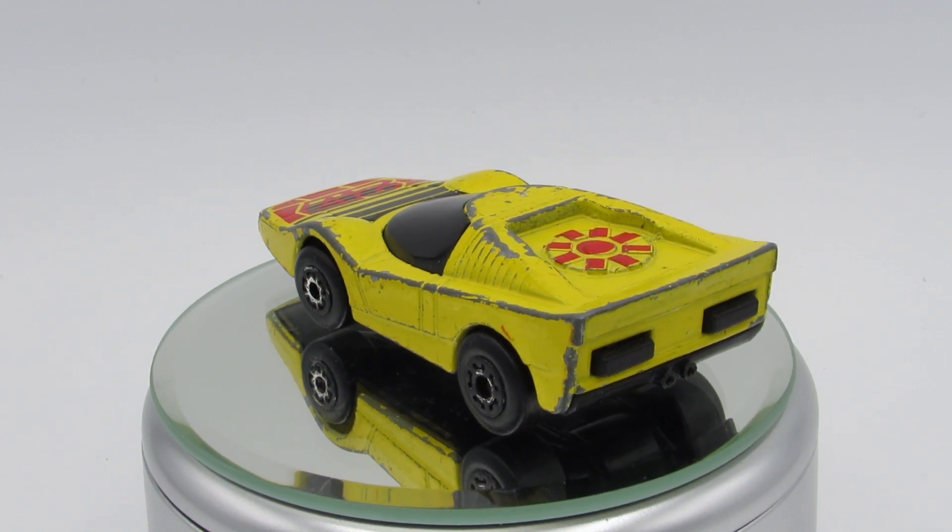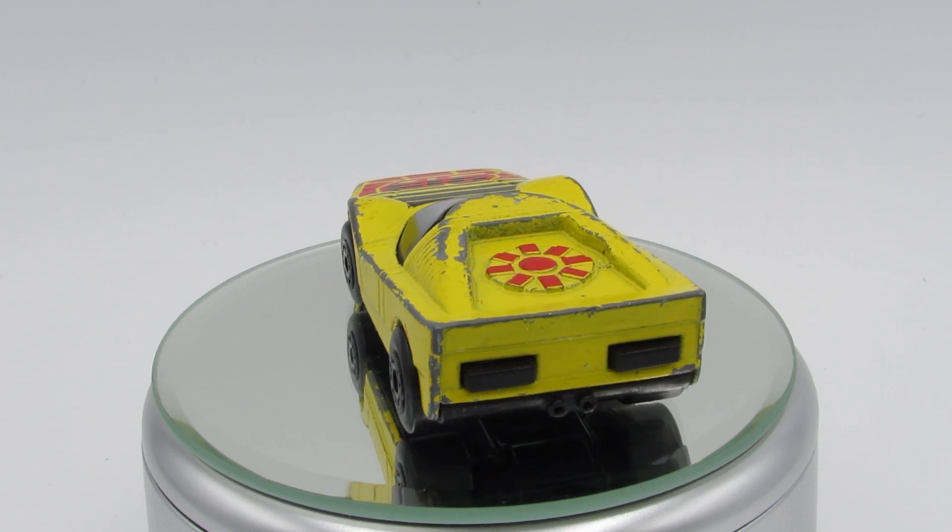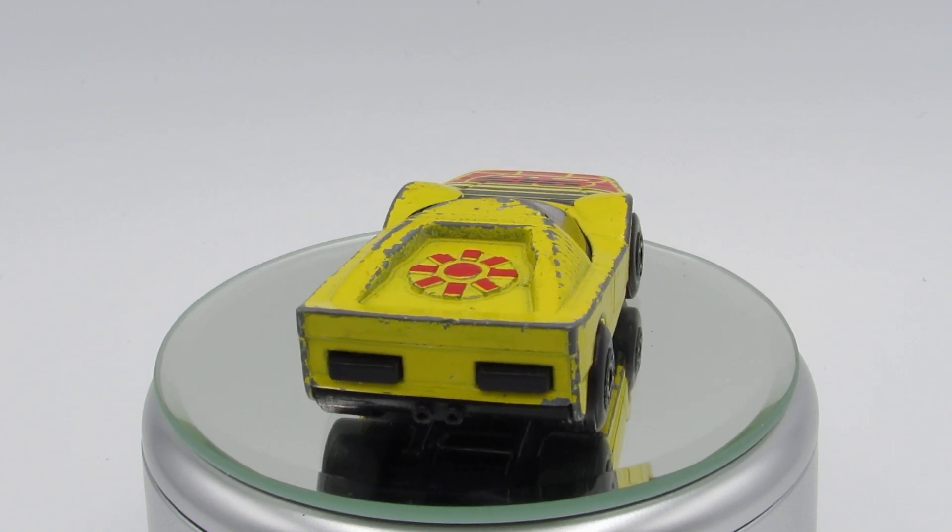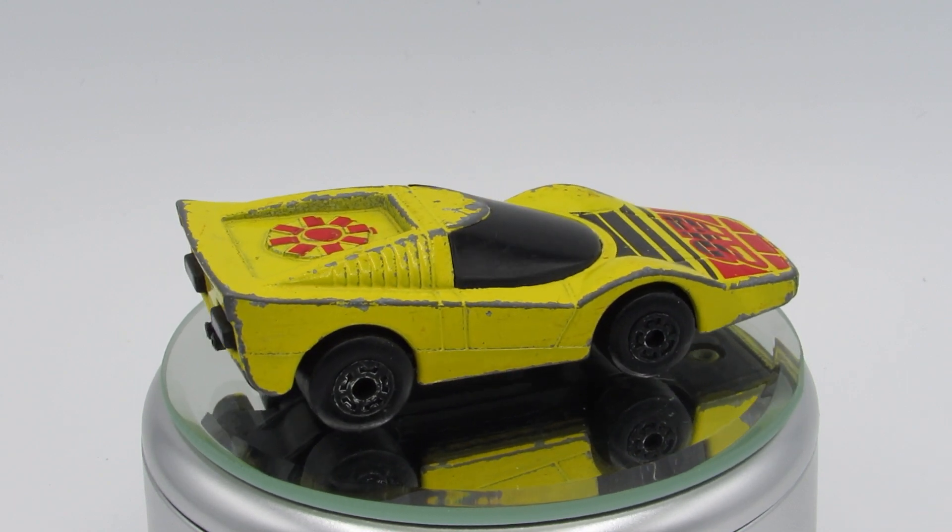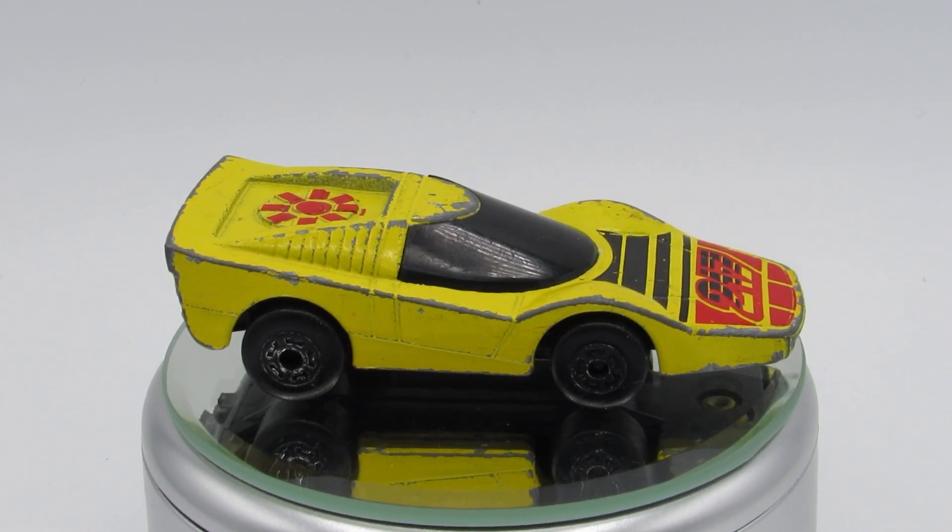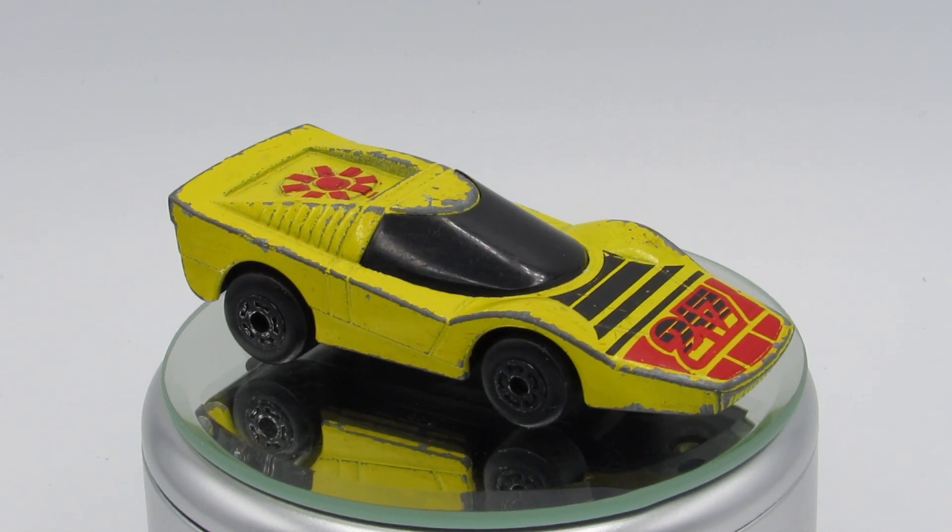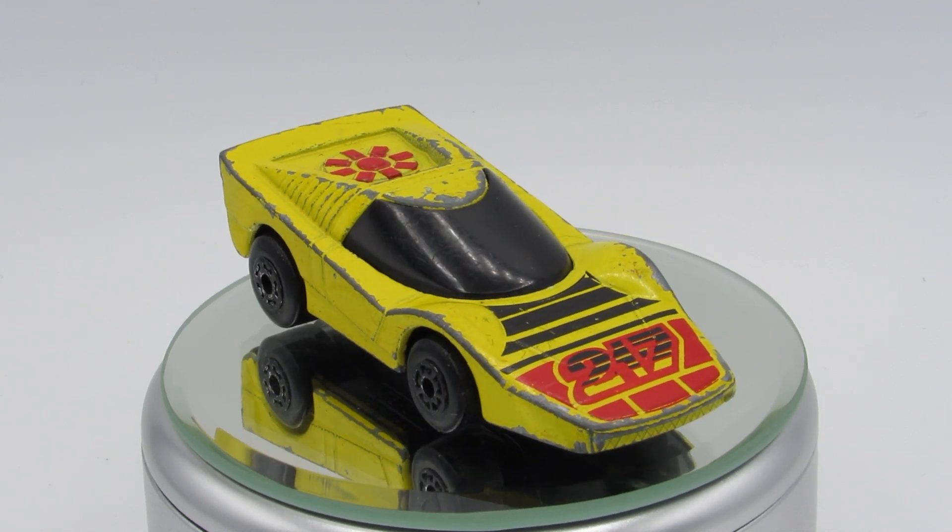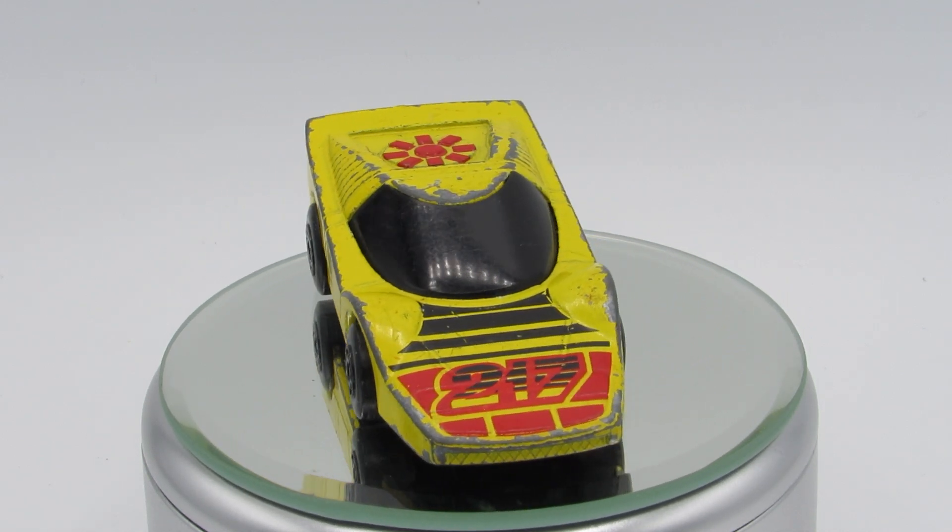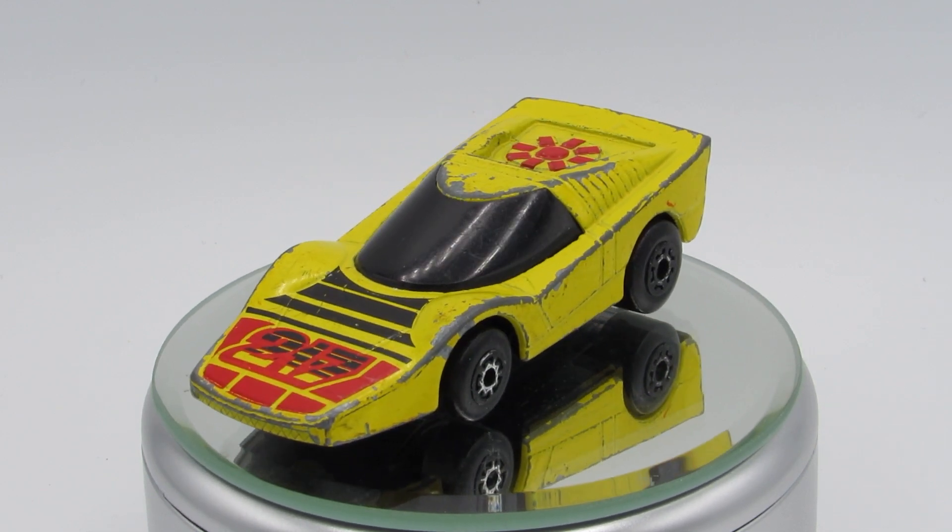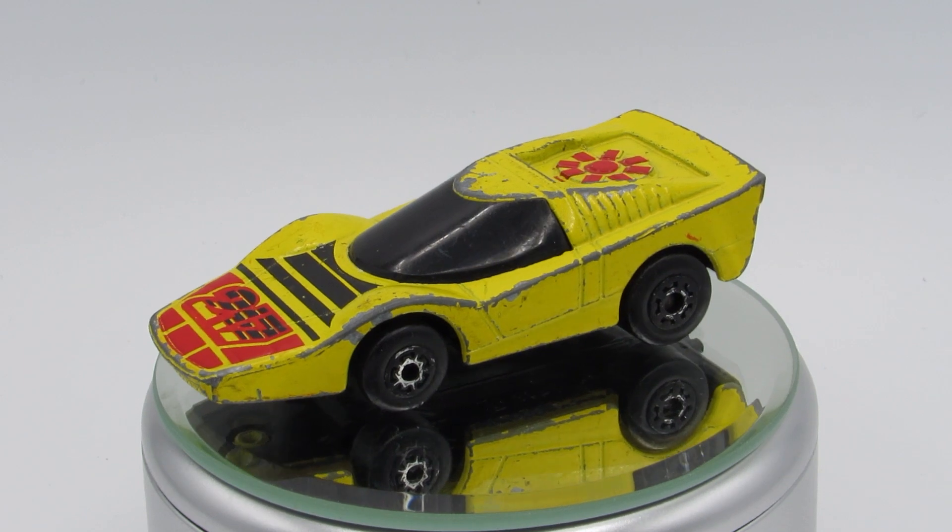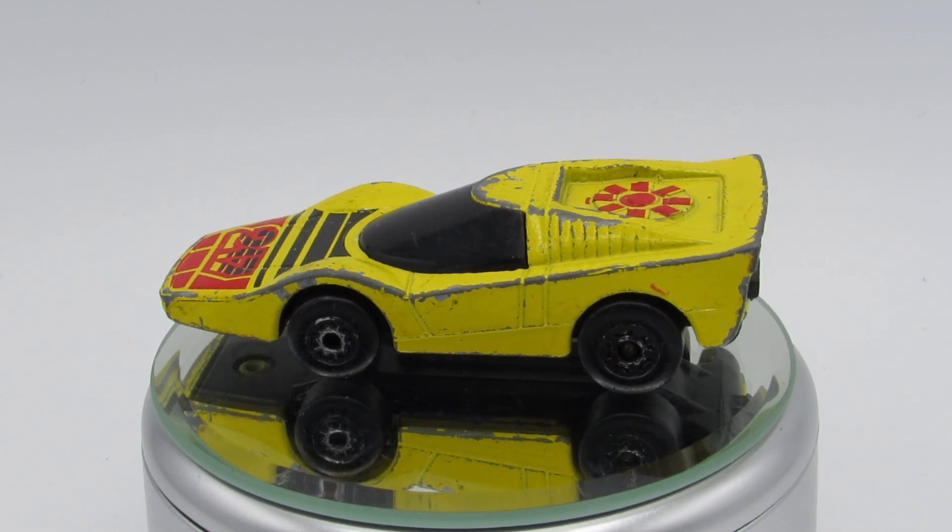The only rules for the Invitational is to customize a diecast using two colors from the Jamaican flag. I chose this Matchbox Fandango Super GT version for this build. This was originally produced as a Superfast version from 1975 to 1981, and it had a spinning fan blade at the back. The Super GT version came out in 1986, ran through 1988.